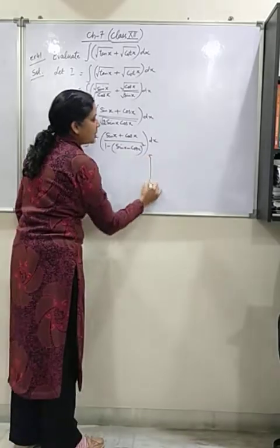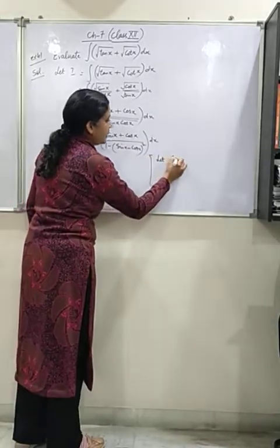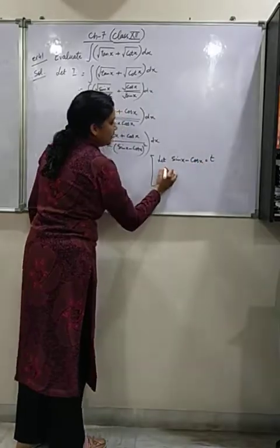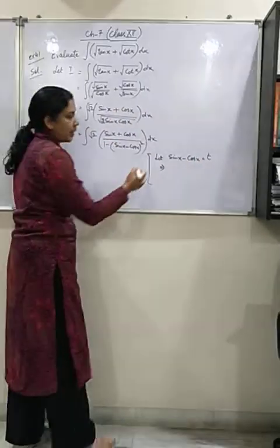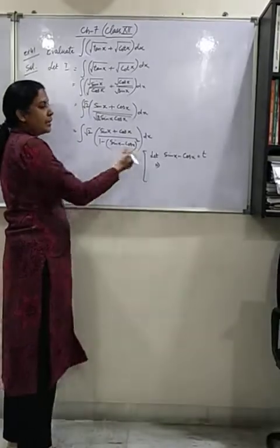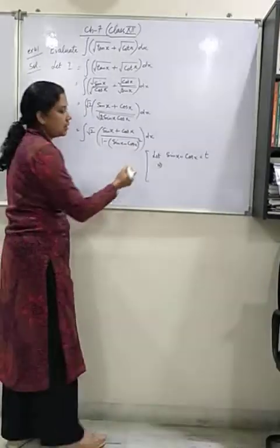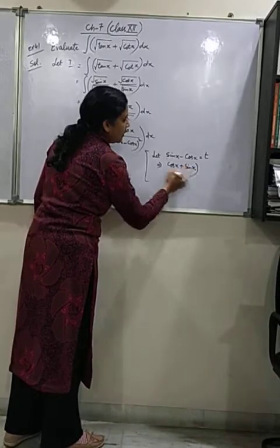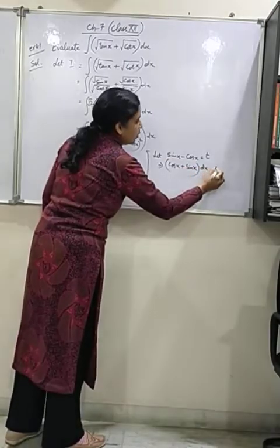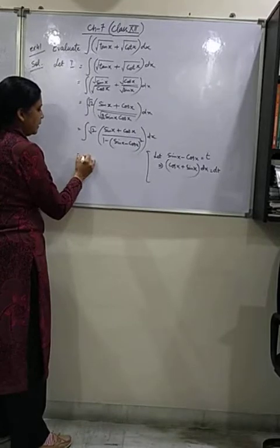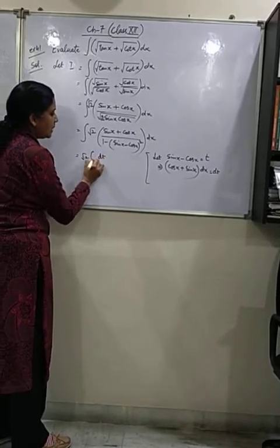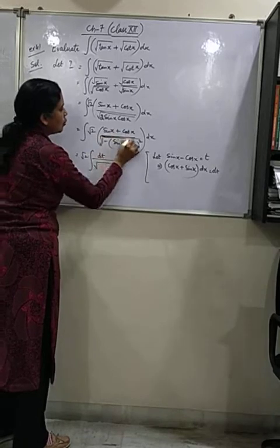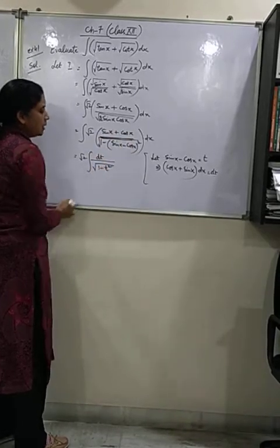Now let's go for substitution. Let sin x minus cos x be taken as t. In the indefinite integral, when we take the substitution, we have to go for the derivatives also. That gives us the whole numerator as dt. So it becomes very simple, dt upon root 1 minus t square.